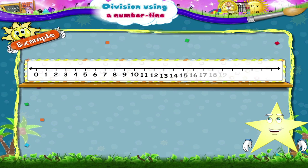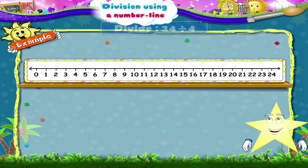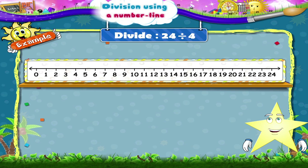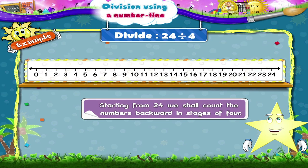Will you solve the next example? Divide 24 by 4. Starting from 24, we shall count the numbers backward in stages of 4.